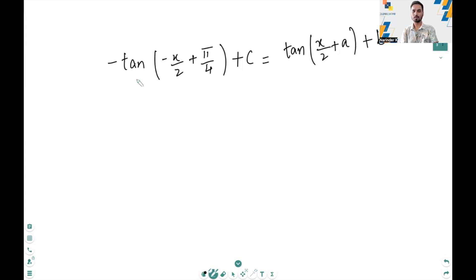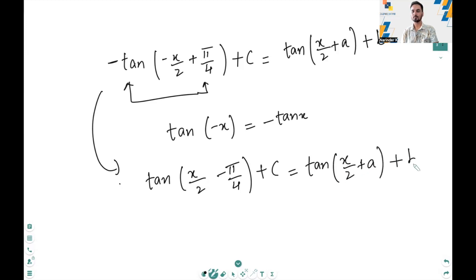In order to compare the two sides, we will rewrite minus tan minus x over 2 plus pi by 4 by using the identity that tan of minus x equals minus tan x. Therefore, the left-hand side will become tan x over 2 minus pi over 4 plus c, and the right-hand side is tan x over 2 plus a plus b.